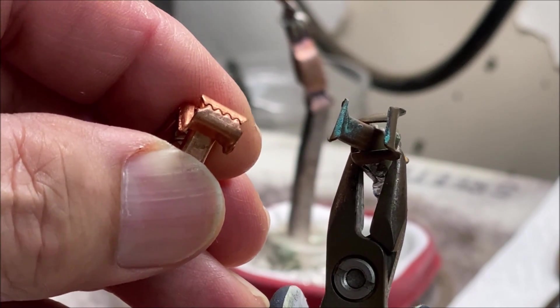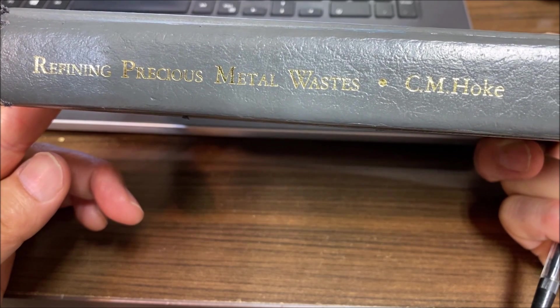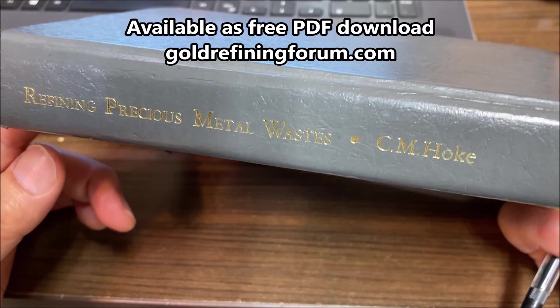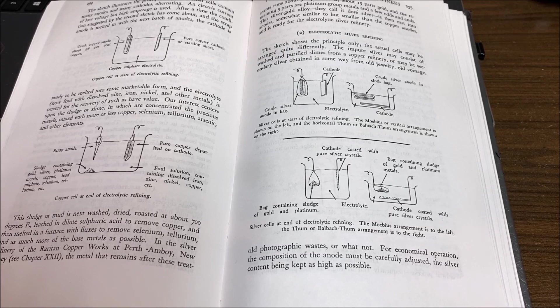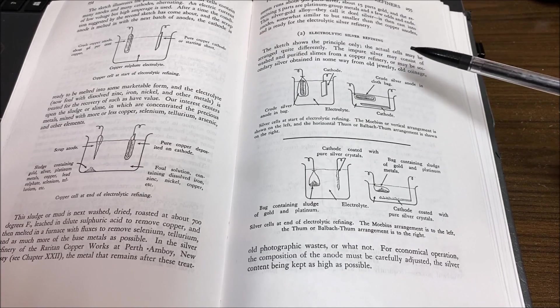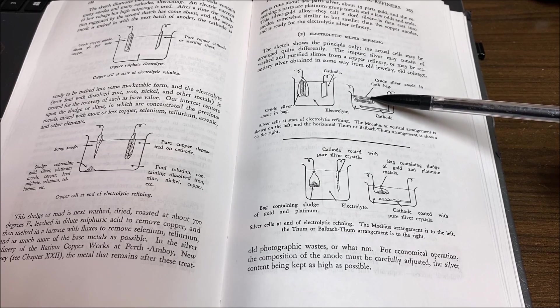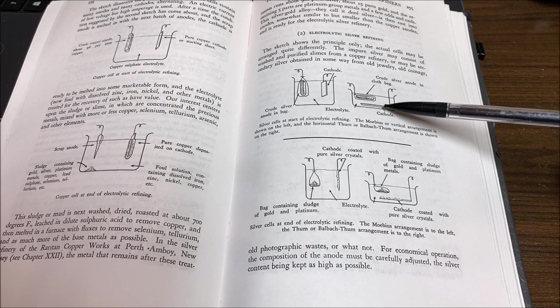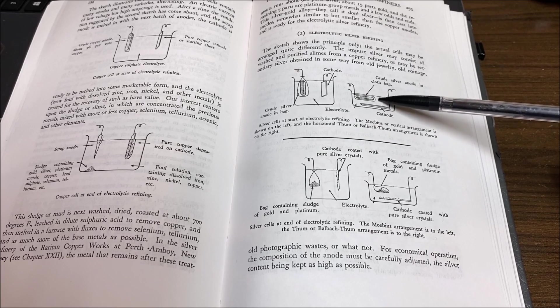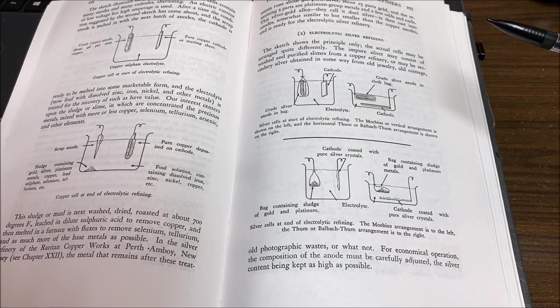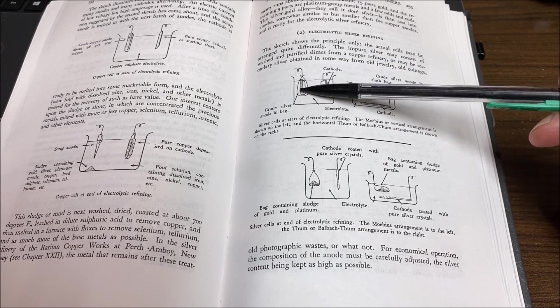This is the book called Refining Precious Metal Waste by CM Hoke. I bought this at gershwin.com, a jeweler supply place, but don't try to go there and buy one because they've sold out. Here we have an illustration on page 255 of the two types of silver cells. The one I use is called the Thum arrangement - the anode sits on top and the cathode rests on the bottom of the cell. But what I've done is use the entire stainless steel bowl as the cathode, so this is the arrangement I use right here. It's called the Thum arrangement.